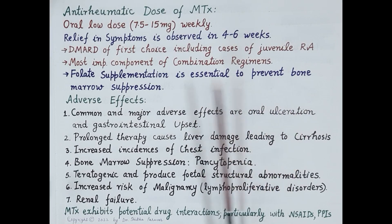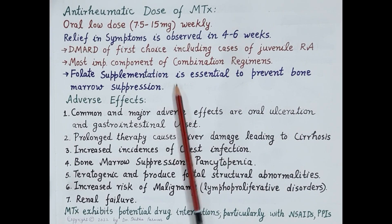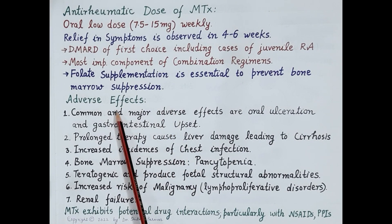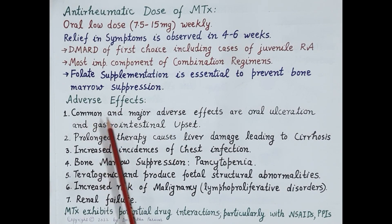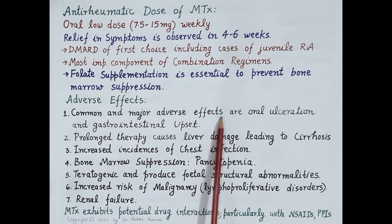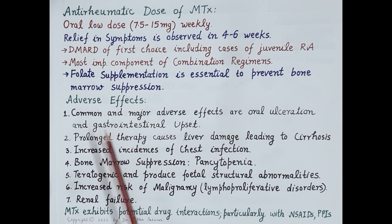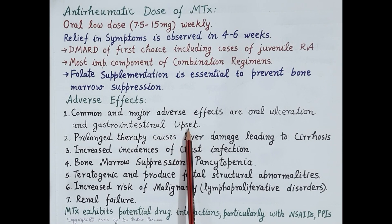It is very important to remember that methotrexate is a folic acid antagonist, and therefore folate supplementation is essential to prevent bone marrow suppression. The common and major adverse effects of methotrexate include oral ulceration and gastrointestinal upset.